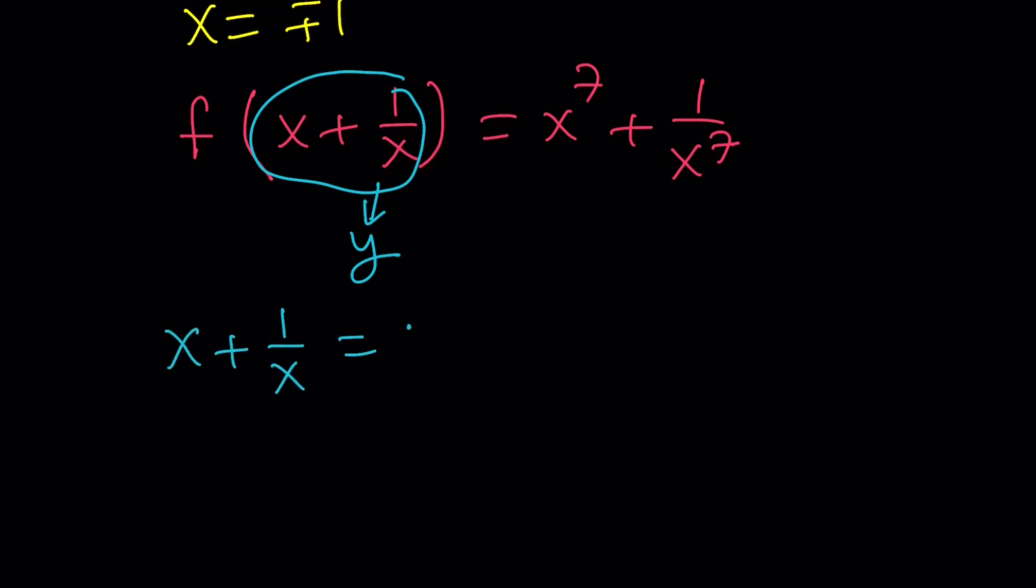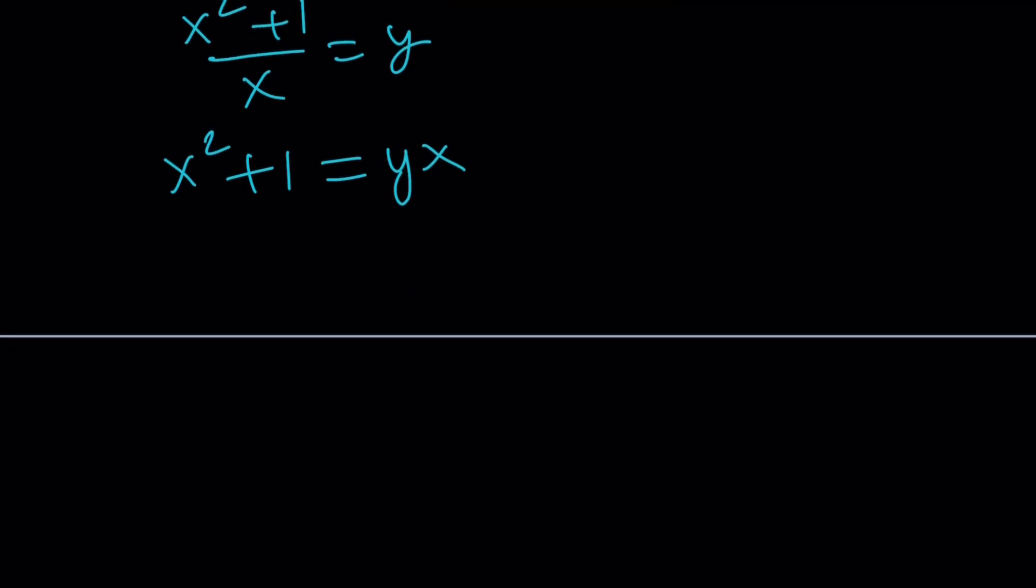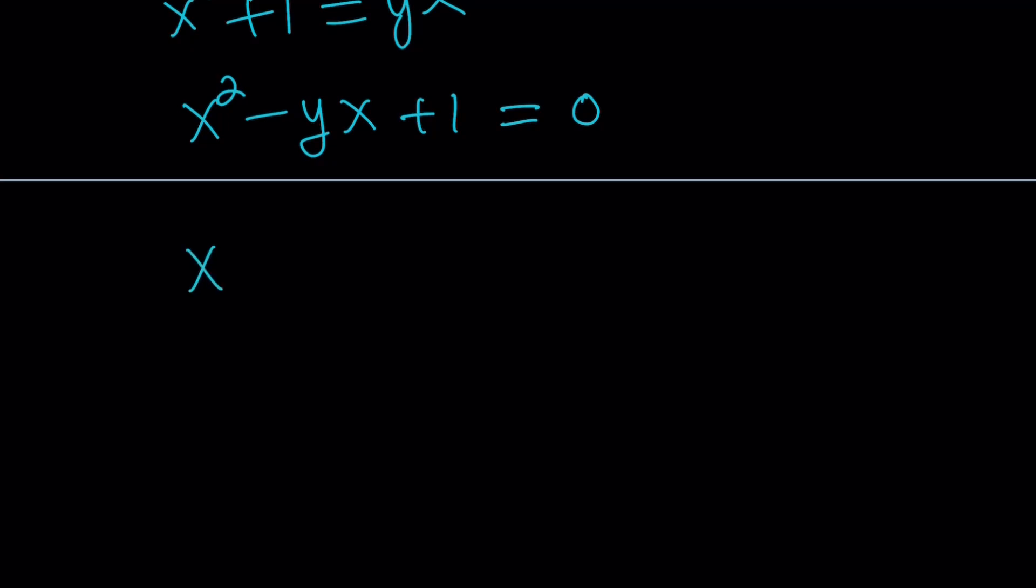x plus 1 over x equals y. From here, we get x squared plus 1 over x equals y, and x squared plus 1 equals yx. Obviously, you can write this as a quadratic equation in x: x squared minus yx plus 1 equals 0. By solving this quadratic, you get two solutions, which explains why our function is not always 1 to 1. x equals y plus minus the square root of y squared minus 4, divided by 2.